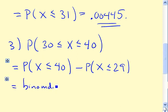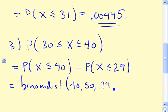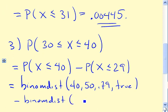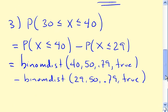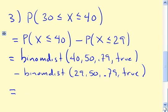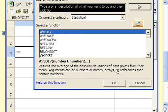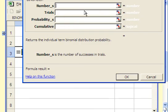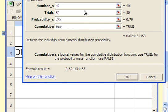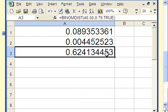So this is binomdist. Now the cutoff is 40 successes out of 50 trials, 0.79 success probability. True. So that'll do the first part. And then minus binomdist. Now it's 29, 50, 0.79 true. So we can actually go do these two calculations in Excel. So the first one will be 40 successes, 50 trials, 0.79 true. So this is the probability that x is less than or equal to 40.